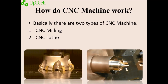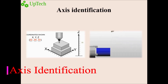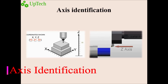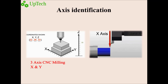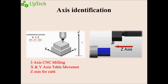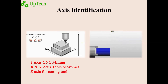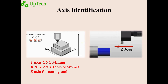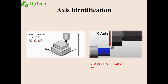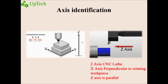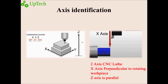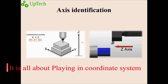Talking about axis identification, there are different types of axis machines available in the market: 2-axis, 2.5-axis, 3-axis, and 5-axis. In CNC milling, there is a 3-axis machine — X, Y, and Z. X and Y represent table movement, and the Z-axis is for the cutting tool. In CNC lathe, there are basically two axes, X and Z. The X-axis is perpendicular to the rotating job and the Z-axis is parallel. It is all about working in the coordinate system.